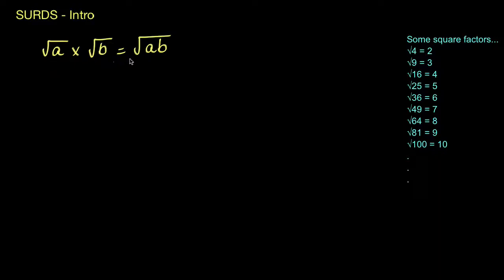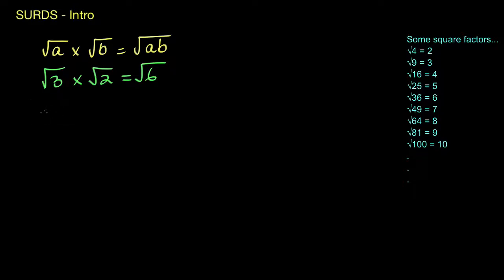When multiplying surds we use this rule: the square root of a times the square root of b gives you the square root of a multiplied by b, or ab. So we could use something like the square root of 3 times the square root of 2 — well, 3 times 2 is 6, so that's simply the square root of 6. We could also try the square root of 5 times the square root of 7: 5 times 7 gives you the square root of 35.